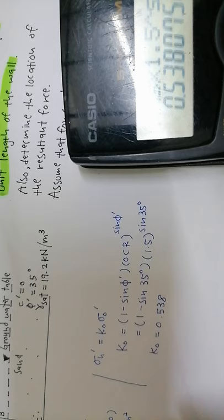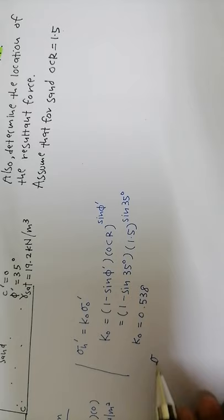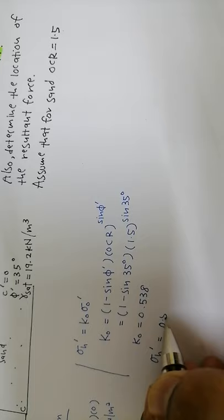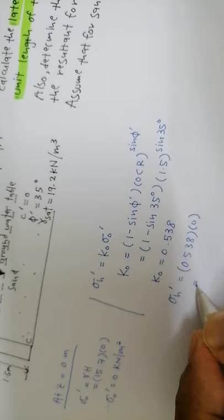So the horizontal effective stress equals 0.538 times 0, which equals 0 kN/m². The calculation is straightforward since the vertical effective stress at z=0 is zero.